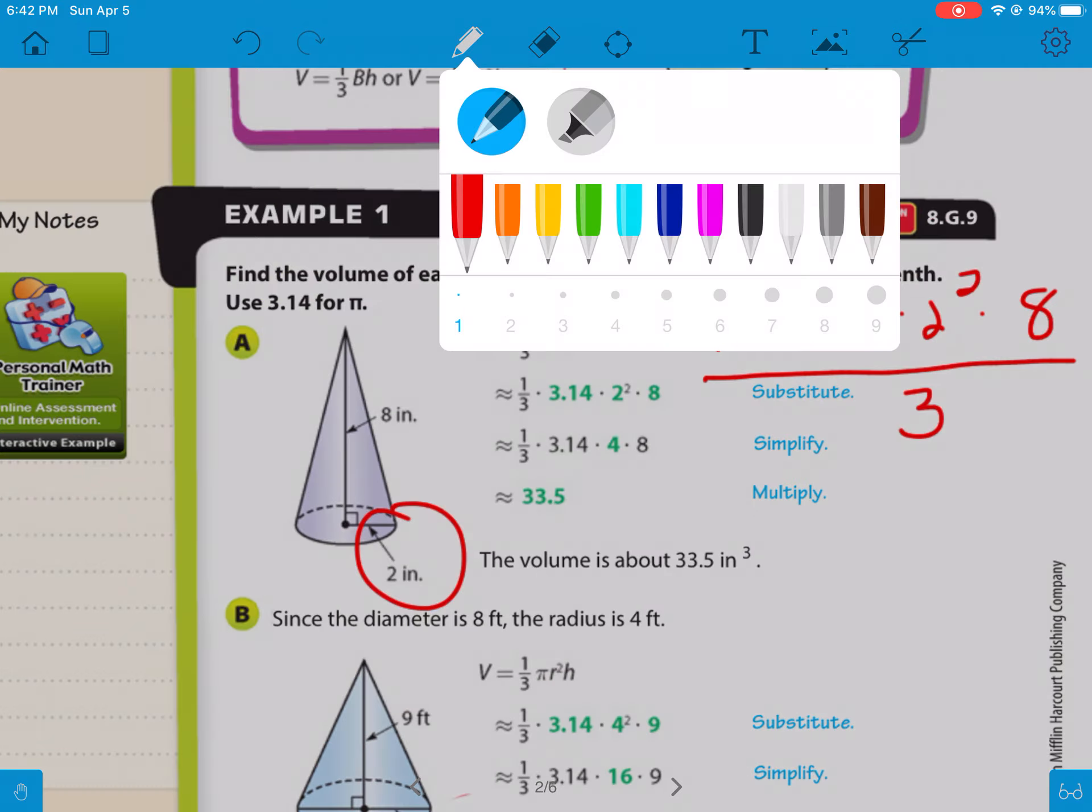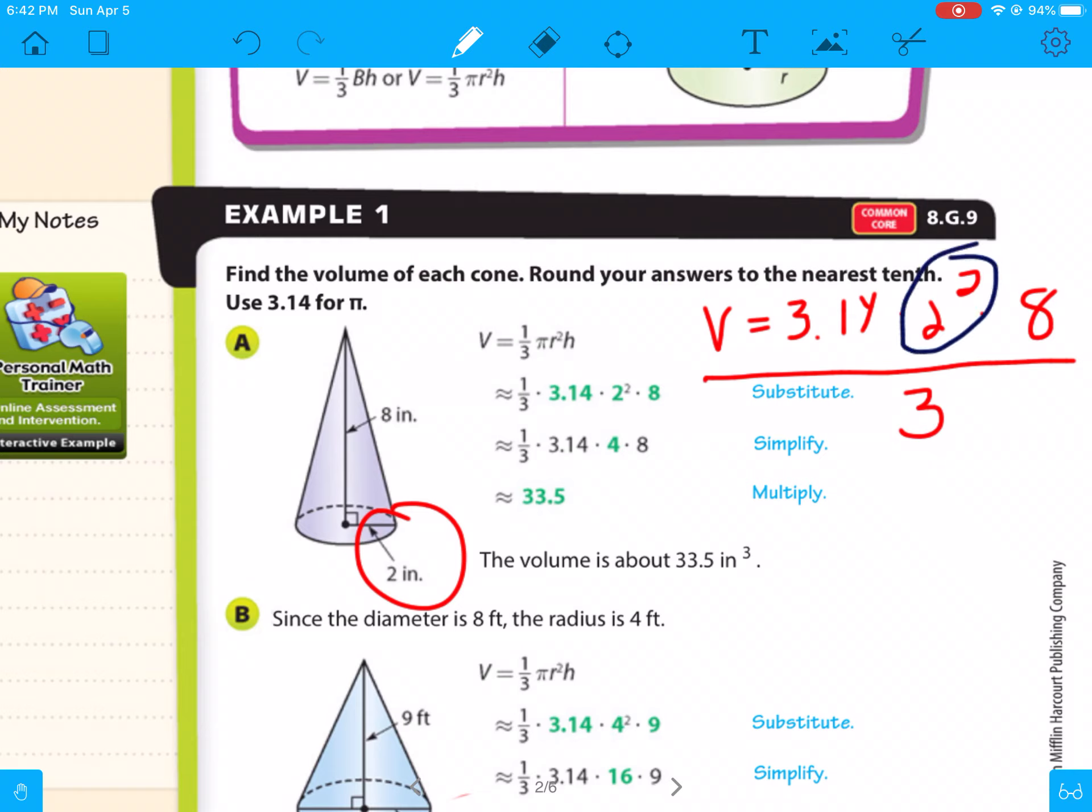So the first thing you're going to have to do here is square your 2. So you're going to get 3.14 times 4 times 8, and then divide that by 3. I find that easier than multiplying by one-third. So we're just going to do 3.14 times 4 times 8 is 100.48, and we're going to divide that by 3, and you get 32.49. And they said round it to the nearest tenth, so it's going to be 33.5, 33.5 inches cubed.